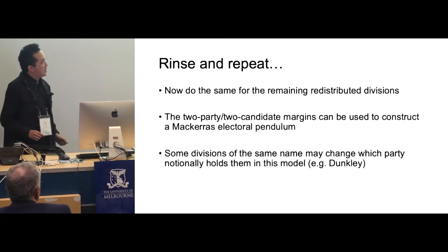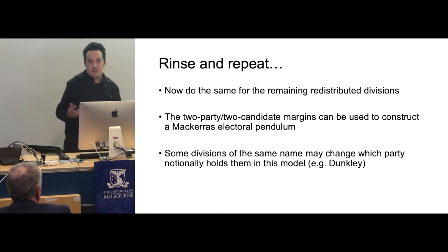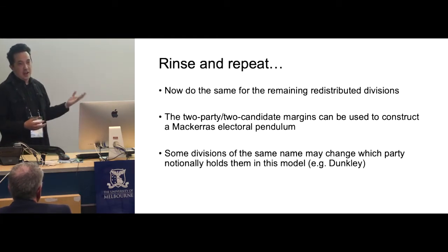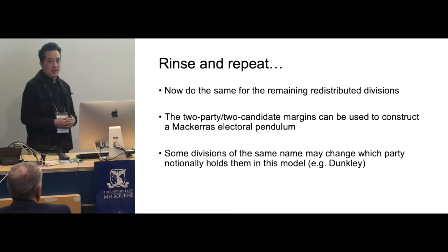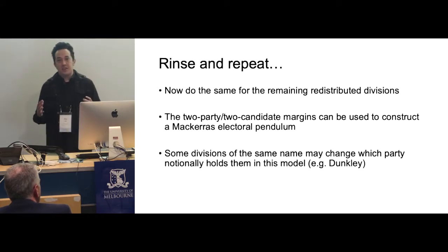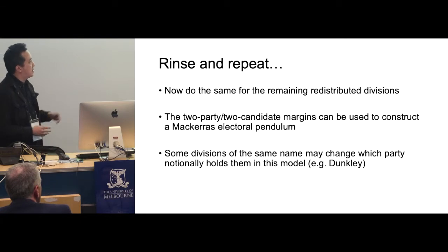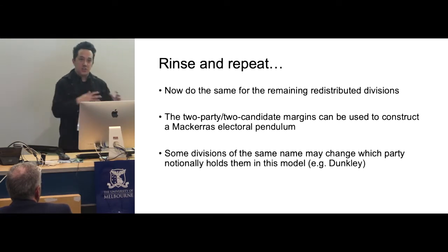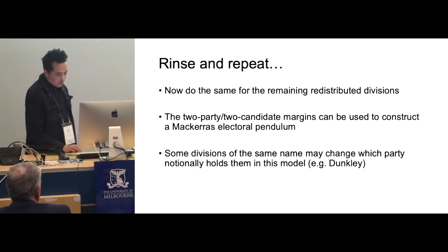Then just rinse and repeat — do the same for the remaining redistributed divisions. Not all states in Australia were redistributed; there were quite a few this year, I think five or six, but New South Wales didn't, for example. You can then use your two-party or two-candidate margins to construct an electoral pendulum. Just note that some divisions, whose boundaries can change so much, may have the same name but notionally will be held by a different party. For example, Dunkley — one of the Victorian seats held by Chris Crewther of the Liberal Party — because of the boundary changes is notionally held by the Labour Party, and these calculations will show that.